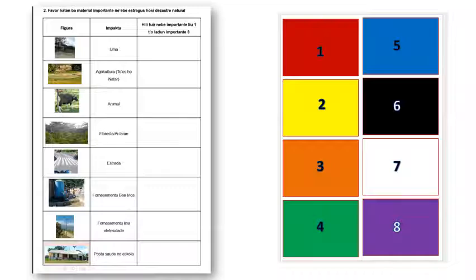The eight assets for question two are: houses, agricultural fields, livestock, forests, road, water supply, energy supply (which is generally electricity), and health posts and schools. Pay close attention to what these features are — these are assets present in the community and you may need to explain what they are. The question is to rank what is most important to the person. All eight cards need to be filled. If they say something is not important, move it to the bottom of the rank, but ask them to rank all eight in order of importance.